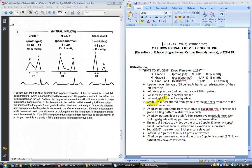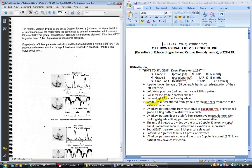Let's go ahead and flip to page 229. So if you take the mitral E velocity divided by the tissue Doppler E prime velocity, taken at the septal annulus or the lateral annulus of the mitral valve, it's used to determine the LA pressure. If the E to E prime ratio is greater than 8, LA pressure is elevated. If the lateral E to E prime ratio is greater than 12, the LA pressure is elevated.